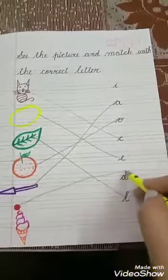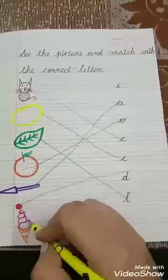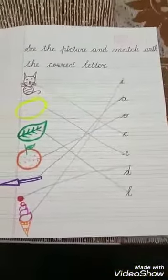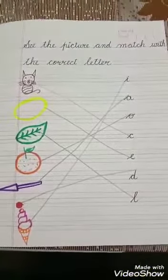D, dot dot. Well done. I, I, ice cream. Very good. Thank you.